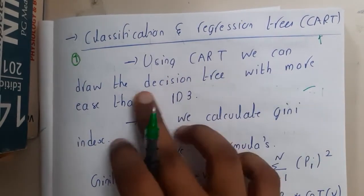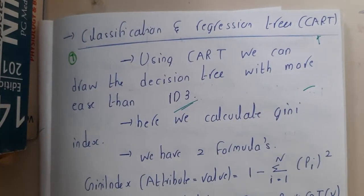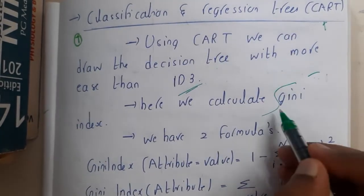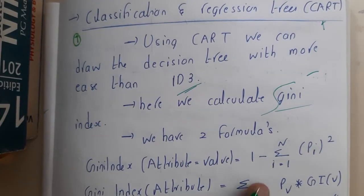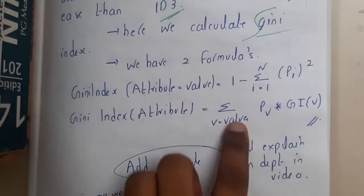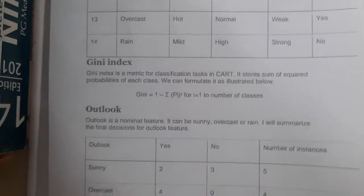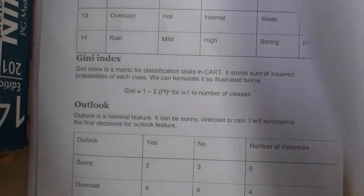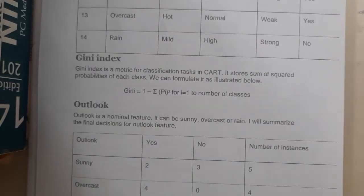Using CART we can draw decision trees with more ease than ID3 — basically, anywhere you search, this is considered the best approach. Here we calculate the Gini index, which is the key metric in this problem. The formula I'm using I found online, and I've added the reference link in the PDF as well.